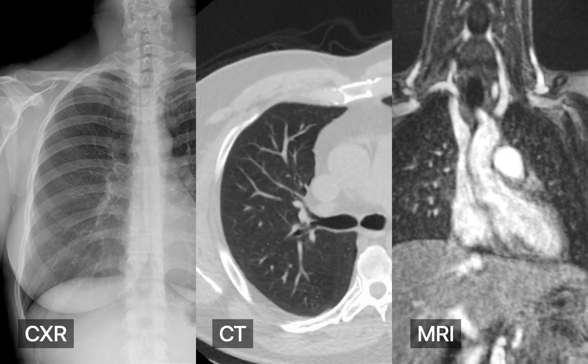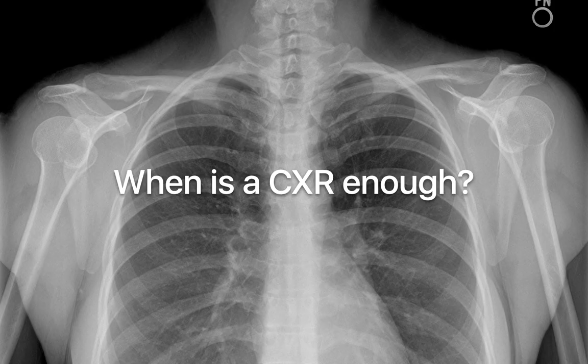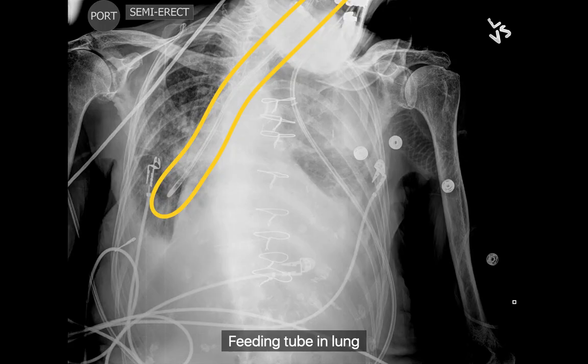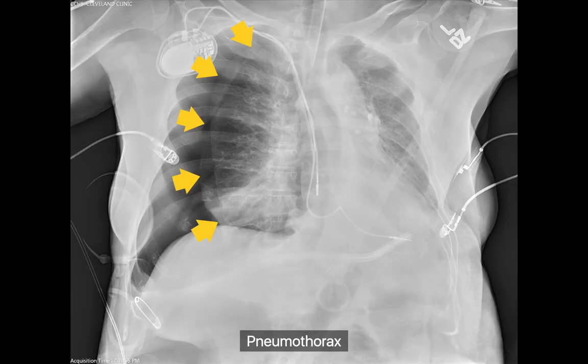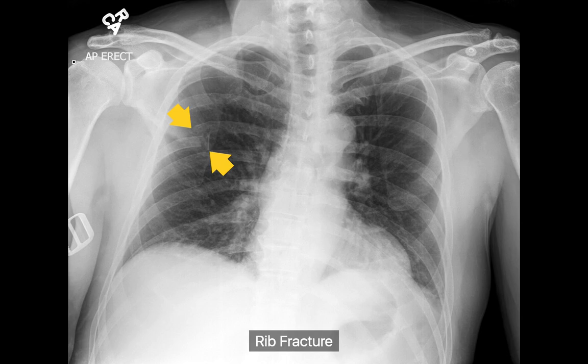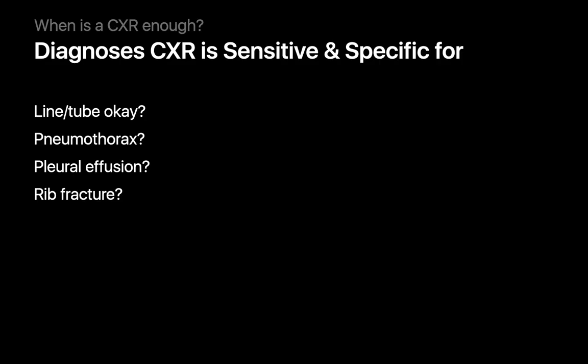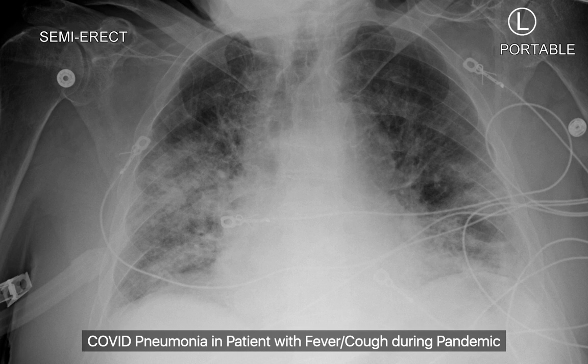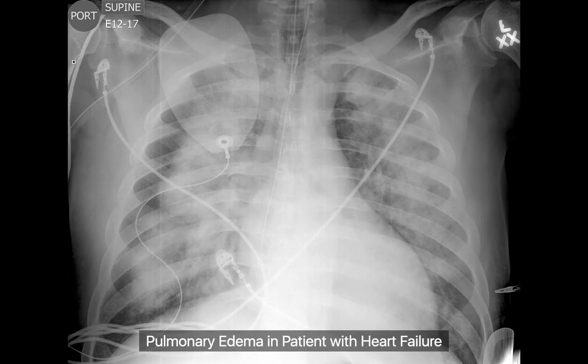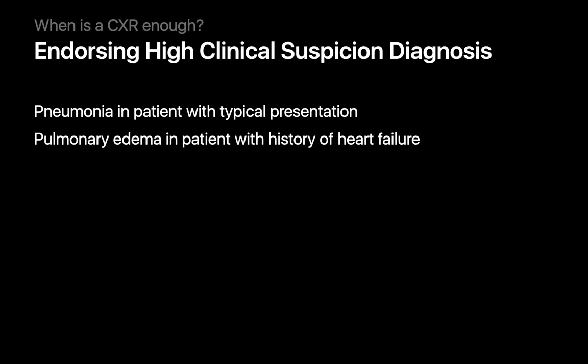So, how do we choose the best chest imaging study for our patients? Let's begin with chest x-rays. There are many situations where a chest x-ray alone is enough to direct management. Four situations that quickly come to mind are verifying the position of lines and tubes, like a feeding tube accidentally inserted into a patient's lung, pneumothoraces, pleural effusions, and fractures. These are situations for which chest x-rays are often both sensitive and specific. There are some other situations where chest x-rays are enough to direct management, such as a patient with COVID pneumonia or a patient with pulmonary edema in the setting of known heart failure — examples where chest x-rays can reasonably endorse an already clinically suspected diagnosis.